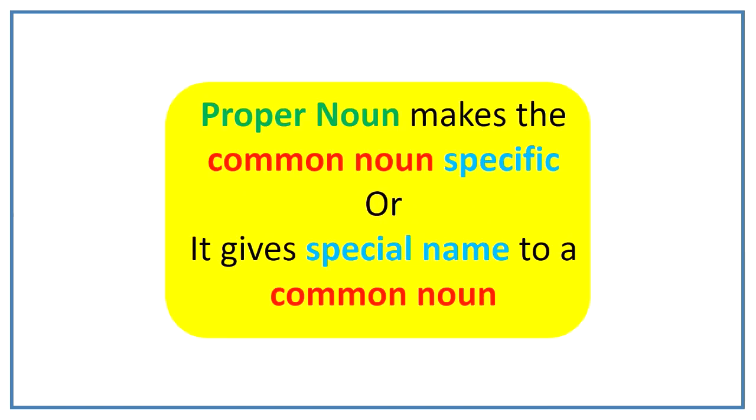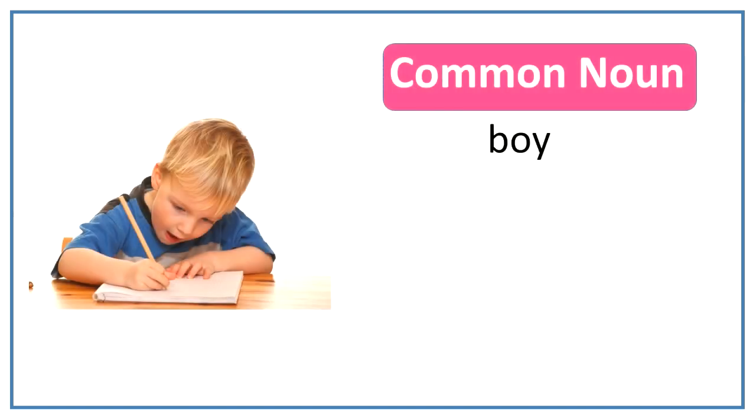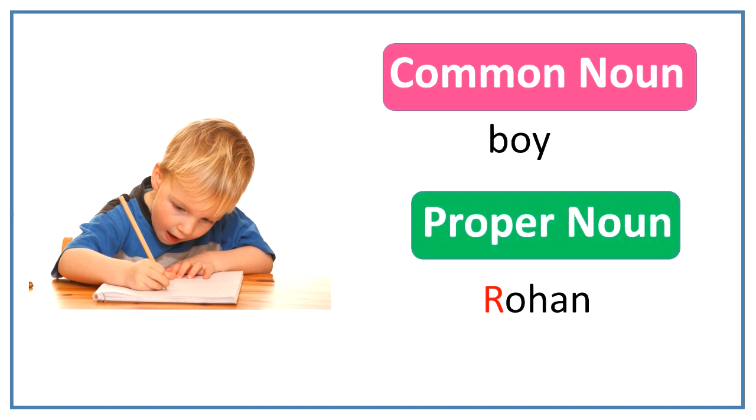Proper nouns make the common nouns specific or we can say that it gives special name to a common noun. For example, boy is a common noun as it refers to a class of person. But if we give this boy a name like Rohan, Rohan will become a proper noun.